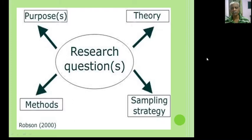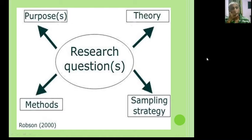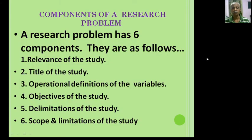If you go through this particular diagram, a research question may be viewed from four angles: the purpose, the theoretical aspect, sampling strategy, and research methods. So, a research question is going to be discussed from these four angles — purpose, theory, sampling strategy, and methods — which are adapted to answer the research questions.